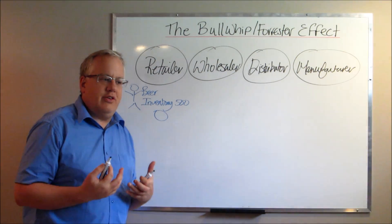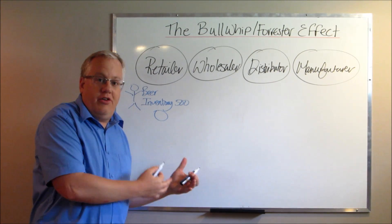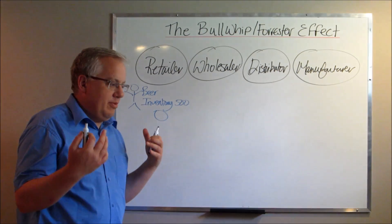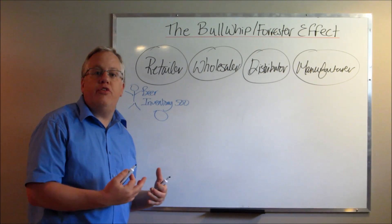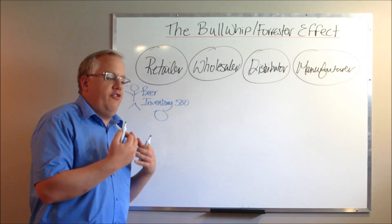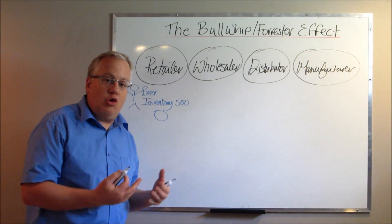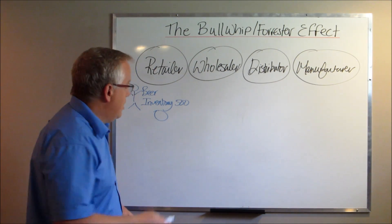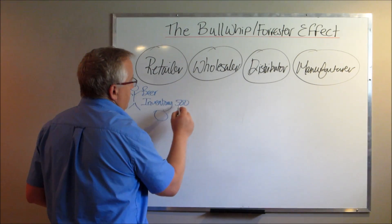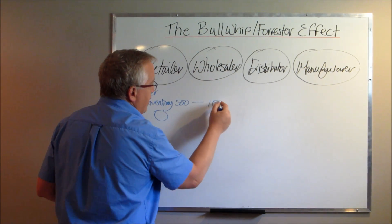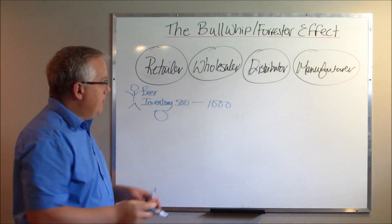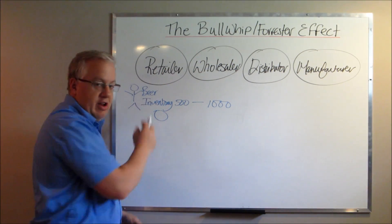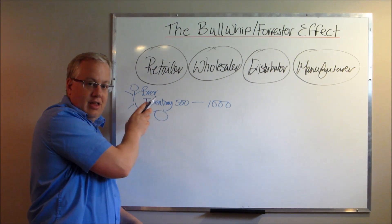And so their anticipation is, wow, we just sold 500 cases of beer. We're going to be selling that every single month moving forward. So instead of using 500 cases of beer every two months, I'm going to need 500 cases of beer every month. So the retailer sends an order over to the wholesaler for 1,000 cases because what they want is they want to replenish their inventory to account for this new demand that they've seen.